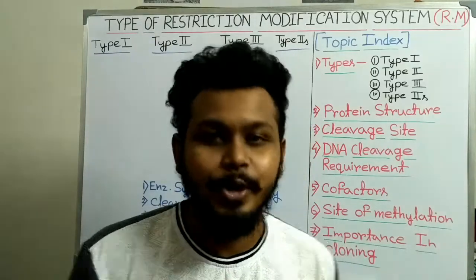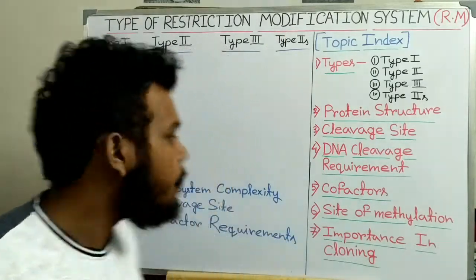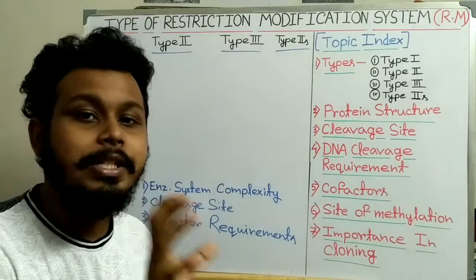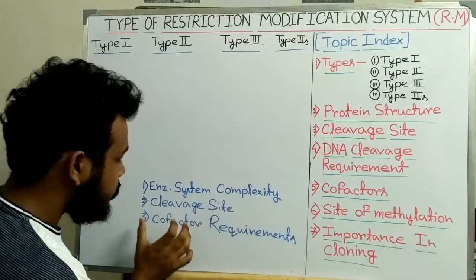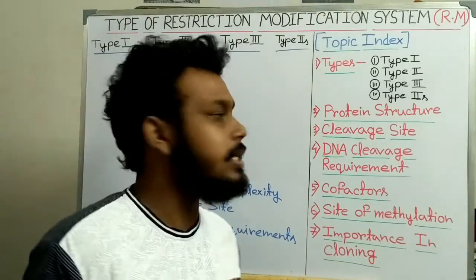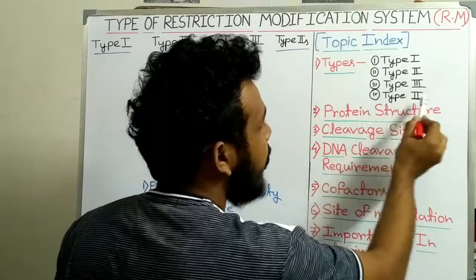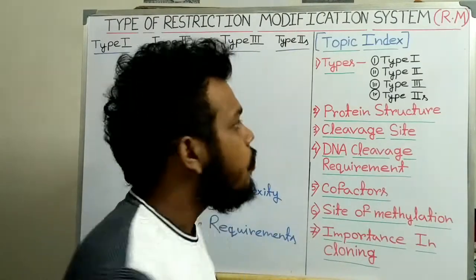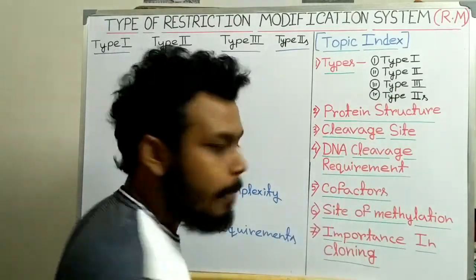Today we'll discuss the types of restriction modification systems. Depending on three factors — the complexity of the restriction enzymes, their cleavage site, and their requirements for cofactors — the restriction enzymes are differentiated into four types: Type 1, Type 2, Type 3, and Type 2s. Type 2s restriction enzymes are much more similar to Type 2, which is why they are named accordingly.